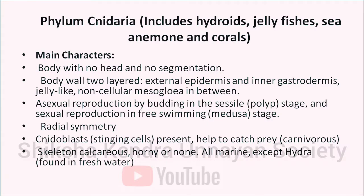The main characteristics of phylum Cnidaria: it has a body with no head and no segmentation. The body wall is two-layered — external epidermis and inner gastrodermis — with a jelly-like non-cellular mesoglea in between, which functions as a hydrostatic skeleton. Nematoblast or stinging cells are present to help catch prey, as it is carnivorous. Skeleton is calcareous, horny, or sometimes absent. Asexual reproduction takes place by budding in the polyp (sessile) stage, and sexual reproduction in the free-swimming medusa stage. All are marine except Hydra, which is found in fresh water.